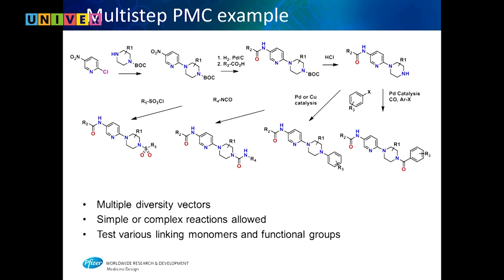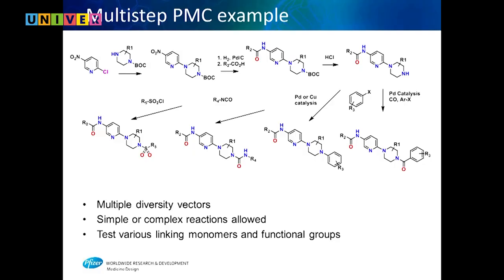Parallel chemistry doesn't have to be one or two steps — it can be five or six. In a made-up example: do an SNAr with piperazines, reduce nitro to amine, make an amide, remove protecting group, then do palladium catalysis or amide formation. You can do direct C–H amination with palladium, copper, or nickel; use isocyanides to make ureas; or use sulfonyl chlorides to make sulfonamides. You have many different groups available to put onto a complex template.